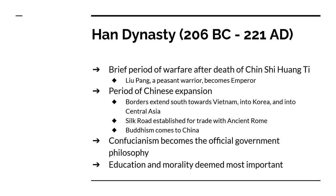This is the period of the Silk Road, where Europeans start coming to China for the first time, and along the Silk Road comes the idea of Buddhism. Confucianism becomes the official government philosophy — it started as a philosophy, not just a religion. The Hans value education and morality above anything else. There's a lot of trade along the Silk Road — rice is imported from Vietnam, causing a population explosion. They're getting silk, iron, and furs from the west and sending Chinese pottery westward. This is also a period when paper and the compass are invented.